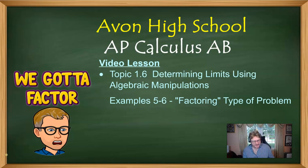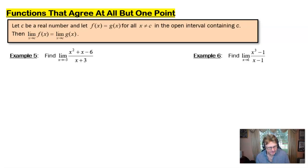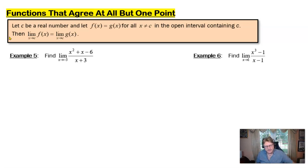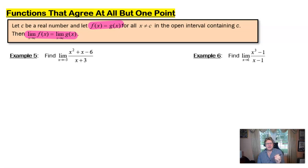We're going to take a look at example 5, but before we do that I want to allude to a description that often is attached to these kinds of limits: functions that agree at all but one point. If you let c be a real number and let f(x) equal g(x) for all x not equal to c in an open interval containing c, we're saying that the limit of f(x) as x approaches c and the limit of g(x) as x approaches c have to be equal. Basically, if you have two functions that are the same, why wouldn't their limits be equal? Even if there's one place where they're not quite the same, we can still find the value of the limit as long as it exists.